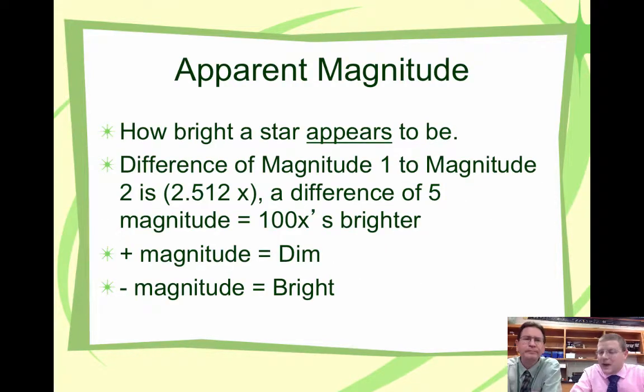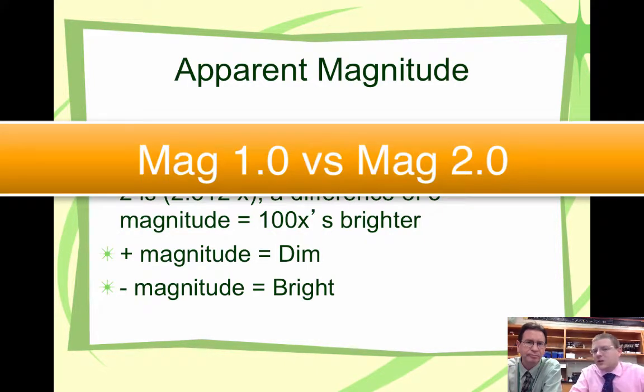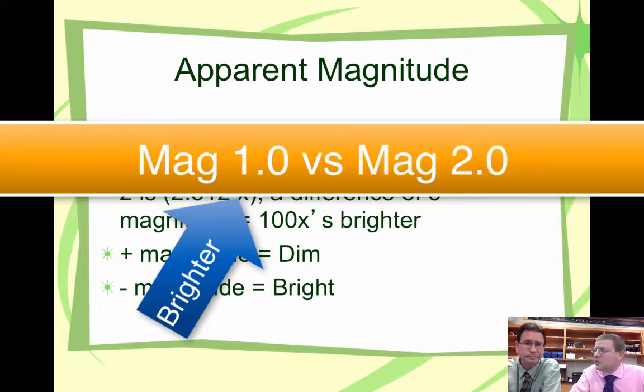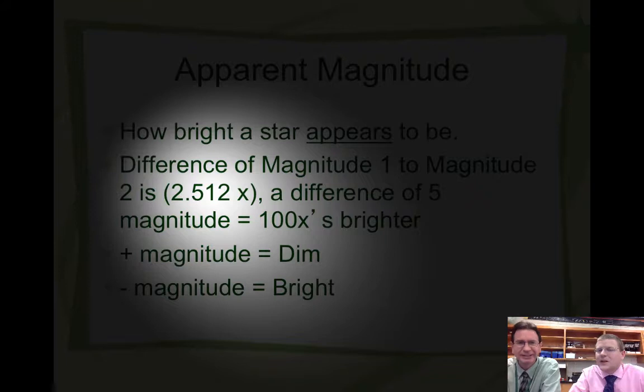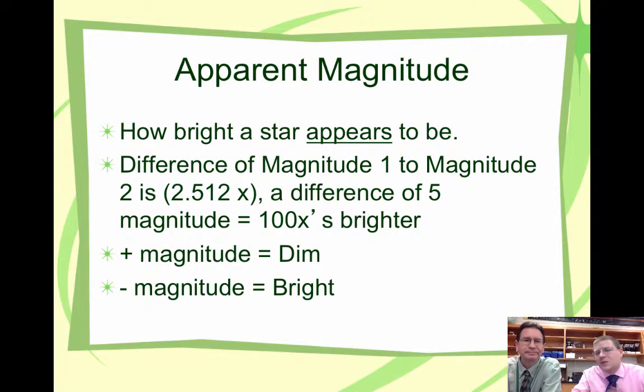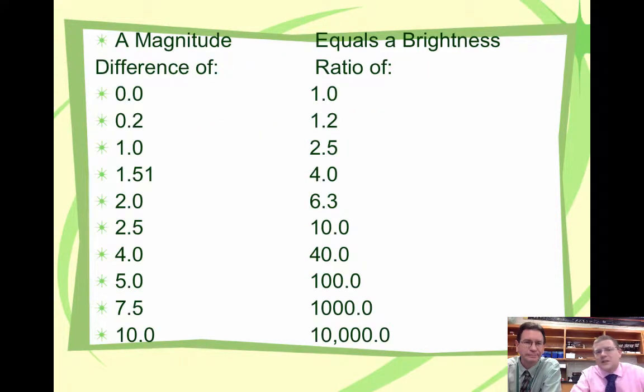And one thing we can do with magnitudes or brightnesses, apparent magnitudes, is compare two of them. So a difference in one magnitude, a magnitude 1.0 star versus a 2.0 star, which one's brighter first? 1.0 is brighter. How much brighter? It's about two and a half times, actually. It's a weird setup. It's logarithmic, just like hearing. We don't hear things in a linear scale. We also don't perceive brightness on a linear scale either. So you can see a difference of 1.0 is two and a half times brighter.